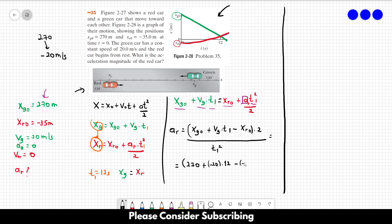Minus minus 35, and everything is multiplied by 2. Then we divide this by 12 squared. And this, if you do this calculation, is 0.9 meters per second squared. This is the answer of exercise 35.